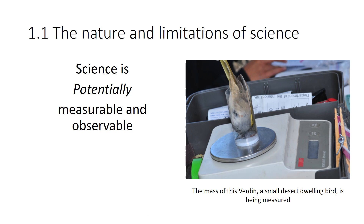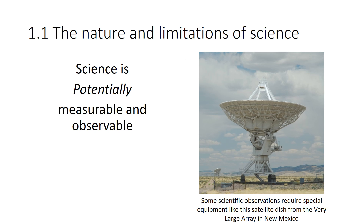Potentially measurable and observable — here's a little verdin, a small desert-dwelling bird. We're observing and measuring it, so asking questions about this bird is definitely within the realm of science. You can't always see things like radio waves — they're everywhere, running your phone, our radios, our televisions, and there are radio waves coming from deep space. You can't directly see a radio wave because our eyes don't have the ability to detect those photons. But these large satellite dishes from the VLA — the Very Large Array in New Mexico — can detect very faint radio waves. Even though we can't directly see something, we use the word potentially measurable and observable, because in this case detecting radio waves from deep space took an advancement in technology and a rather large budget to build the VLA.